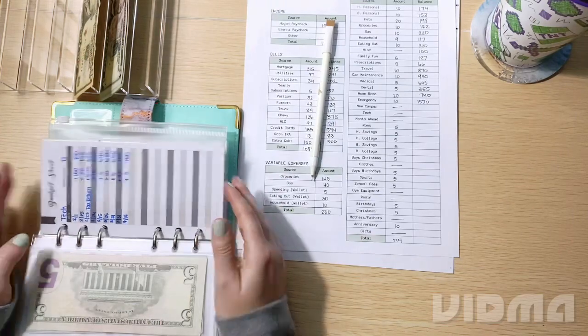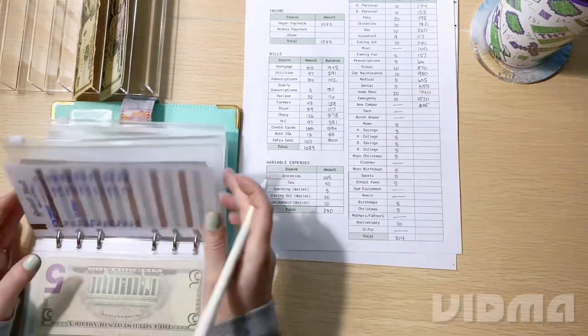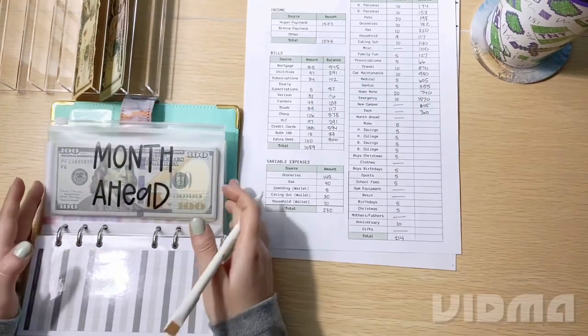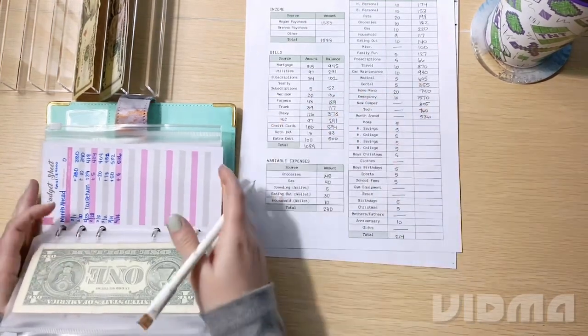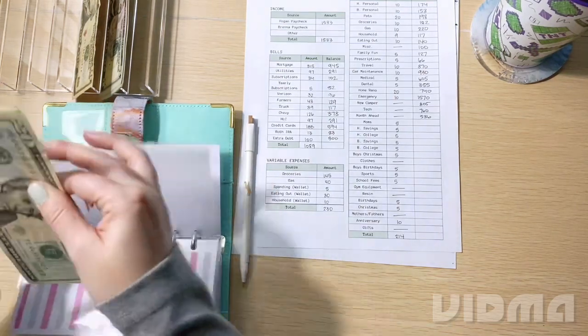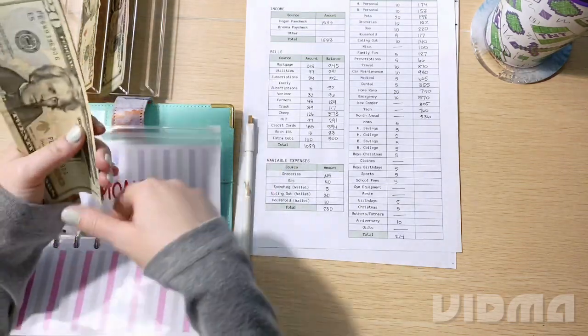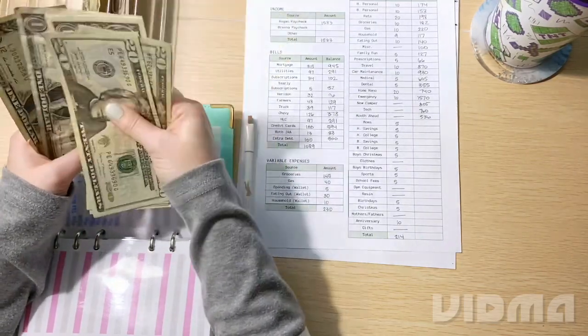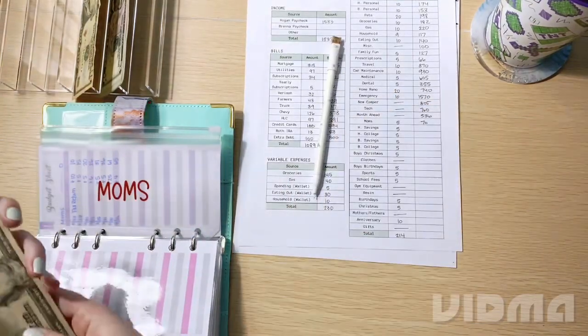Camper is getting skipped. We had $805. Tech is getting skipped. Tech has $760. Month ahead is also getting skipped. It has $536 in it. So now our moms are getting their usual $5. So now the moms have $70 bucks for the momsers.